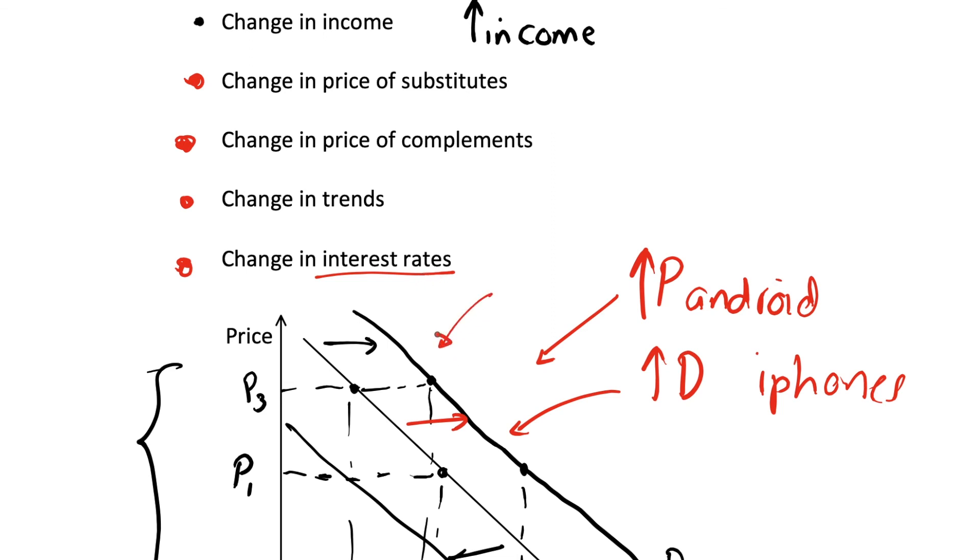So loads of factors that can shift our demand curve. The trick is just knowing how to show this graphically and think of the intuition for it. We're having an increase in demand. So we're shifting our demand outwards to the right.